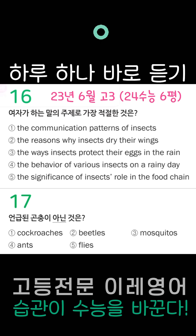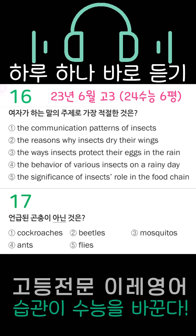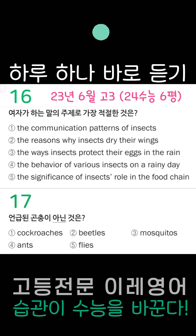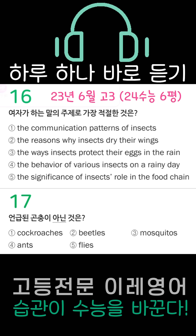다음을 듣고 물음에 답하시오. They leave so they will not drown. To give another example, mosquitoes come out in the rain to lay eggs. Rainy days are the best time since newborn mosquitoes need water to grow.